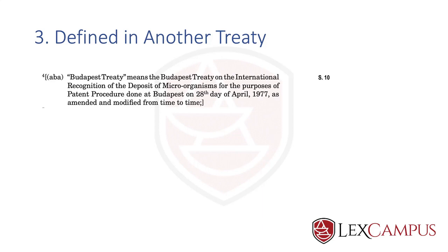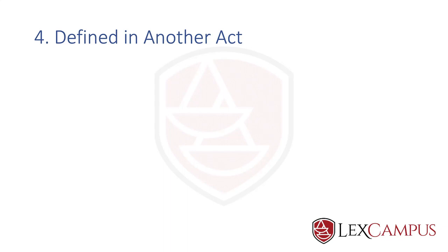You find definitions in the act that refer back to an international treaty. Section 2(1)(aba) states: 'Budapest Treaty means the Budapest Treaty on the International Recognition of the Deposit of Microorganisms for the Purposes of Patent Procedure.' So the act refers you to another treaty, which has its own setup, regulations, and member parties. This is the third classification, and section 10 is the relevant section.